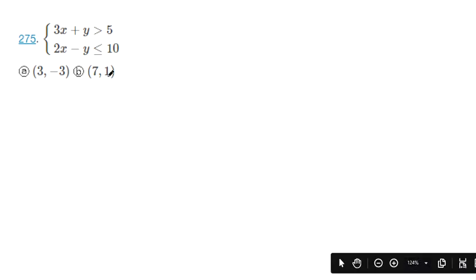If an ordered pair is a solution to this system of inequalities, then we should be able to plug in the x and y coordinates and it should make a true statement.